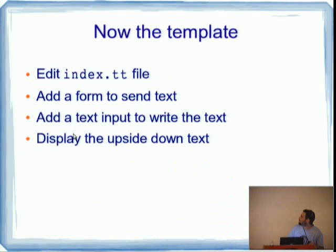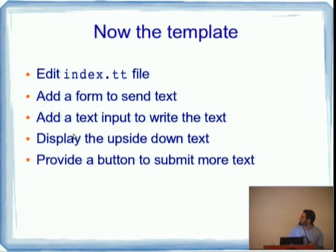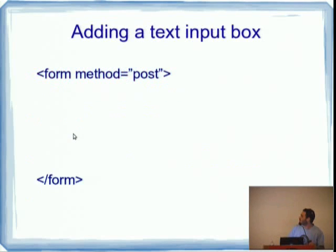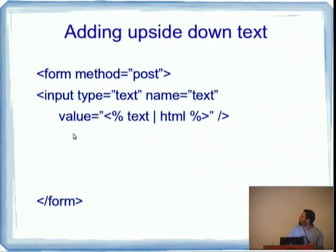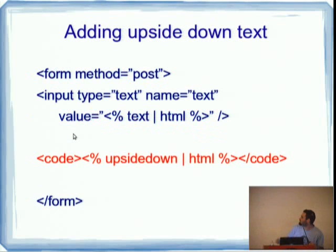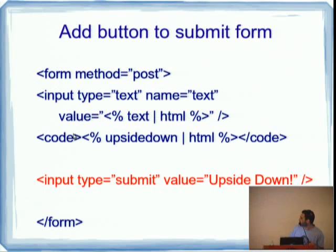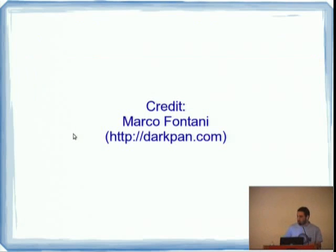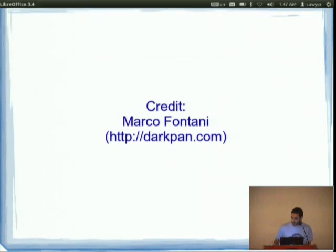Then we're going to put it all together. This is how it looks - this is the entire Dancer code. Then we're going to create the template. Basically a form in text. Adds text input to write the text, displays the text upside down, push the button. We have the form here, we put the text value there - an input that shows the text and submits more text. This is how it looks. This is actually a website that Marco Fontani wrote. I just liked it so much I had to do a lightning talk about it.